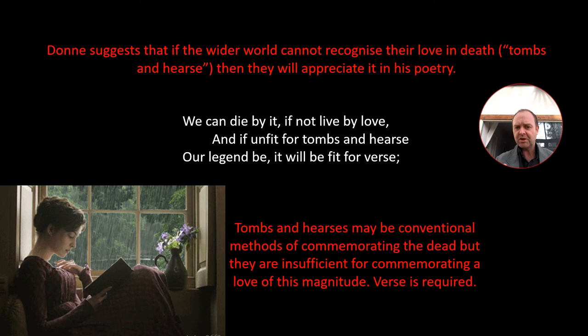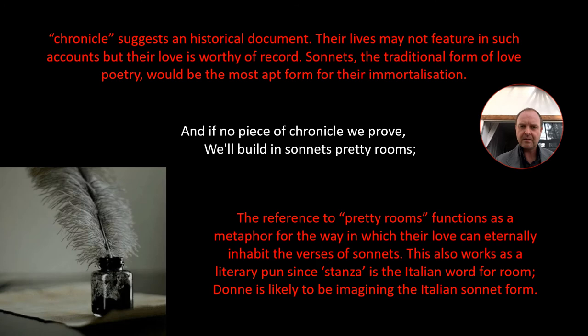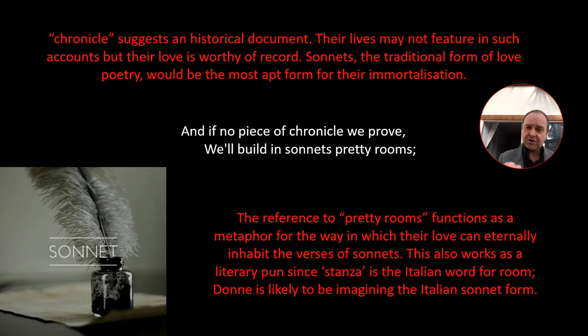Donne seems to be suggesting that if the wider world can't recognise their love in death through the symbols of their death — the tombs and the hearse — then they will appreciate it in his poetry. Tombs and hearses may be the conventional method of commemorating the dead, but they're not sufficient for commemorating a love of this magnitude. Instead, verse is required. 'And if no piece of chronicle we prove, we'll build in sonnets pretty rooms.' Chronicle here suggests a historical document. Their lives might not feature in those historical accounts because they're not historically significant individuals, but their love is significant on a world stage. Sonnets, the traditional forms of love poetry, would be the most apt form for their kind of immortalization.